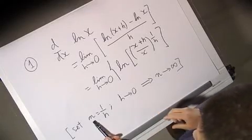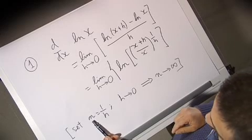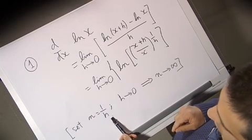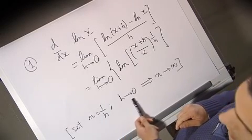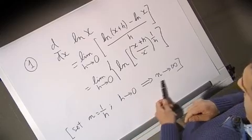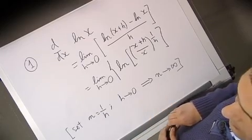Now it's useful to make a substitution, so you can introduce another variable n, and this is just taken to be 1 over h. So if you have h that goes to zero, your n will go to infinity. This allows you to rewrite this expression in a form that is maybe more tractable.